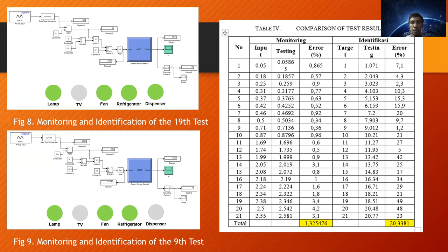From the results of testing, several load combinations obtained the characteristics of monitoring and identification of the load current. The test results are shown in the table 4 for the comparison of the test results. From the figure, the biggest error is in the 19th test that is equal to 14.9%, while the test with the small error is the 9th, which is equal to 1.2%. The test results are displayed in figure 8 and 9 for this picture.